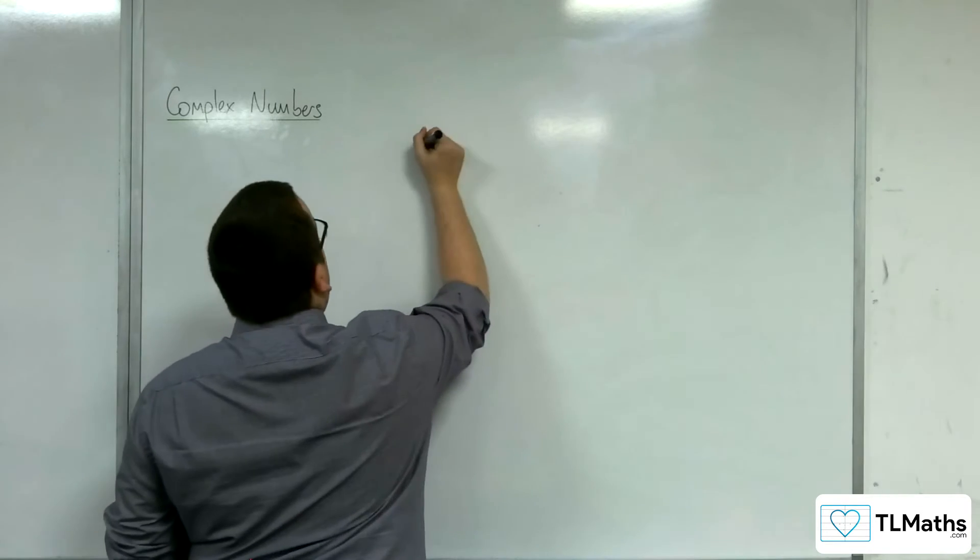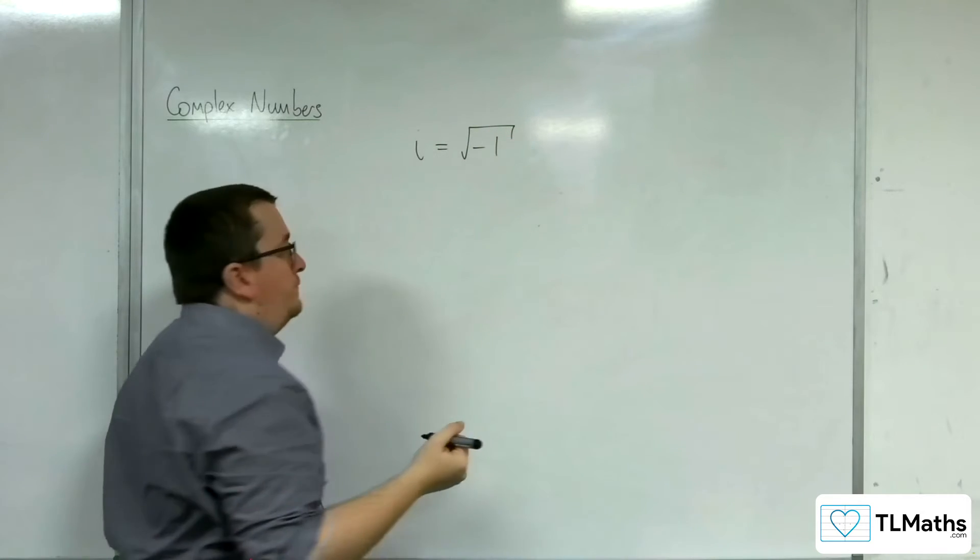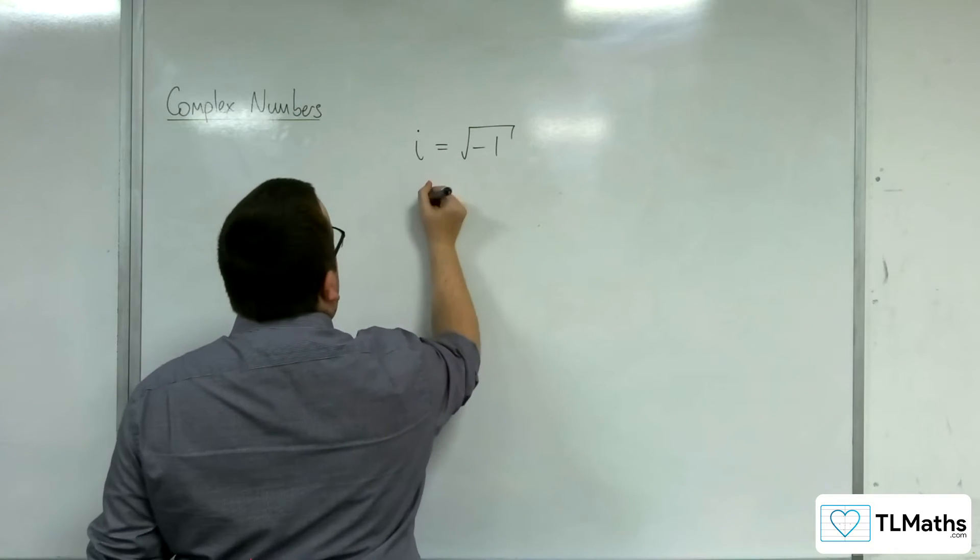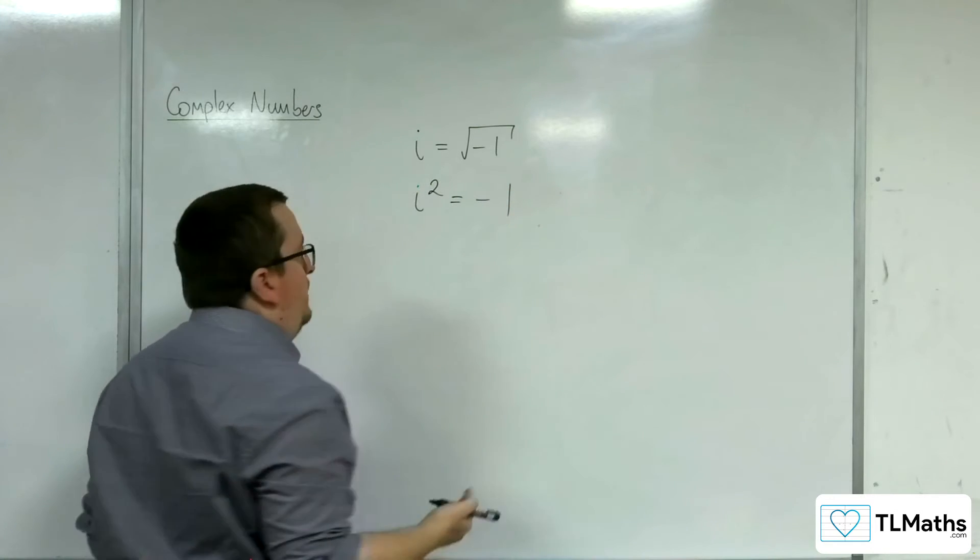We understand i to be the square root of negative 1. So that means when I square both sides of this, i squared must therefore be equal to negative 1.